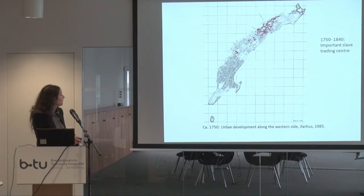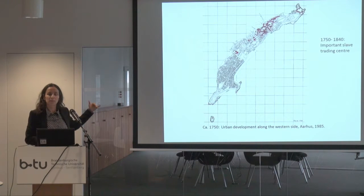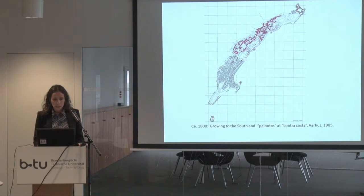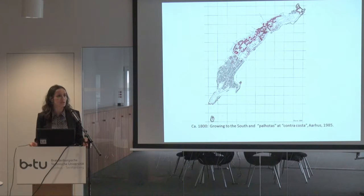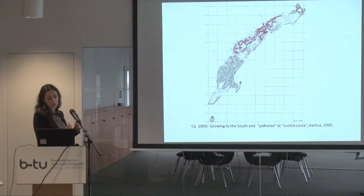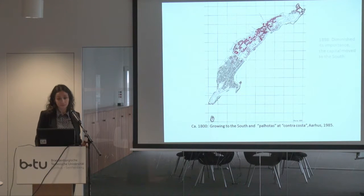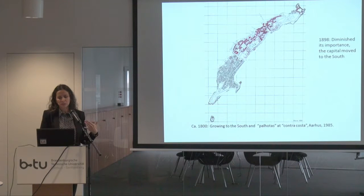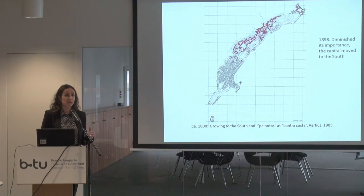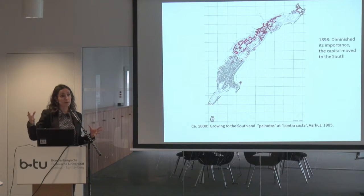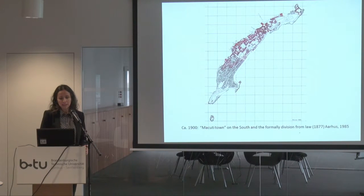The local people were not supposed to occupy the north area, so they were always on the periphery. The city continued to grow toward the south, and the Paliotas — the houses of the local people — were supposed to be settled only on the Contra Costa and in the south. The city then diminished in importance when the capital moved south to Lourenço Marques, which was very near South Africa.